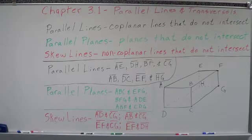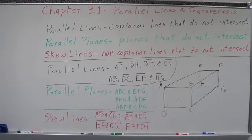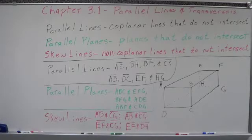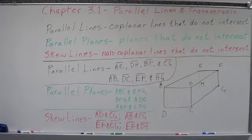We're starting with chapter 3 — we went to chapter 9 and we're coming back to chapter 3. Section 3-1 is parallel lines and transversals. There's some vocabulary we need to get a hold of before we go forward. Like always in geometry, you've got to have all the vocabulary words in order to make sense out of this stuff.